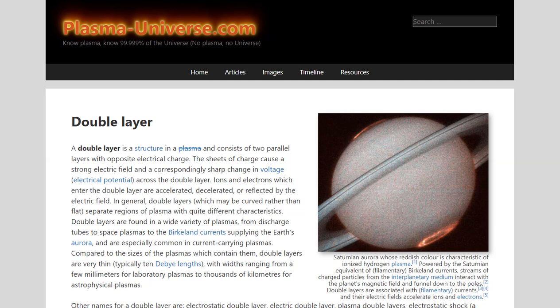That just shows you something about the state of astrophysics. Now, in fact, what we are witnessing are double layers. These are structures in plasma that consist of two parallel layers with opposite electrical charge, and the sheets of charge cause a strong electric field and a corresponding sharp change in voltage. You can get multiple rings.